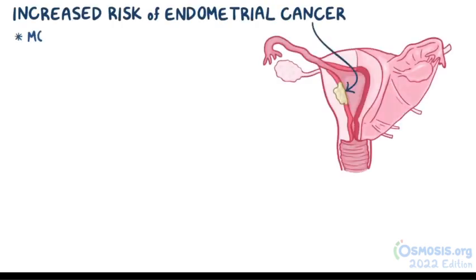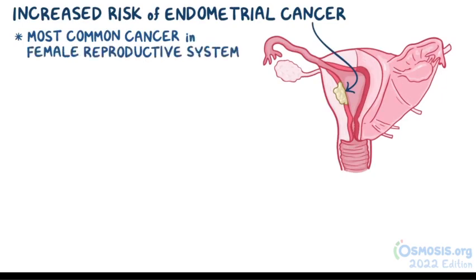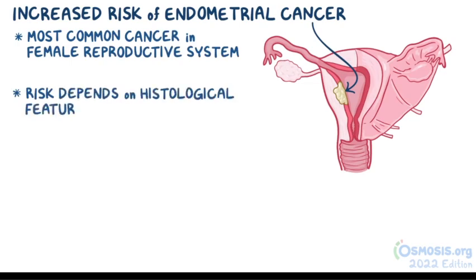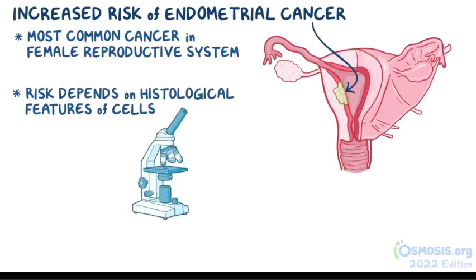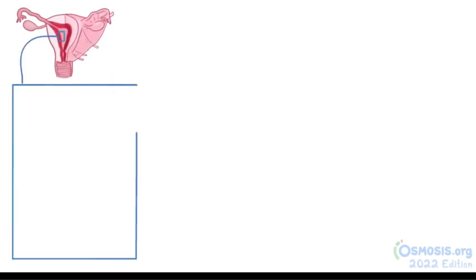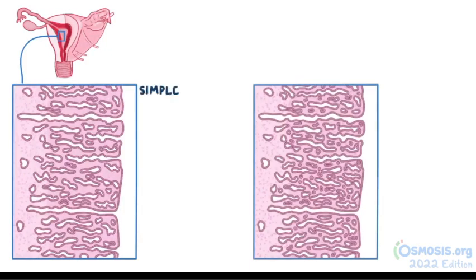The most concerning problem with endometrial hyperplasia is that it increases the risk for endometrial cancer, which is the most common cancer arising from the female reproductive system. The risk depends on the histological features of the cells undergoing hyperplasia. In simple hyperplasia, there are dilated glands and stroma, but their ratio is similar to normal tissue.